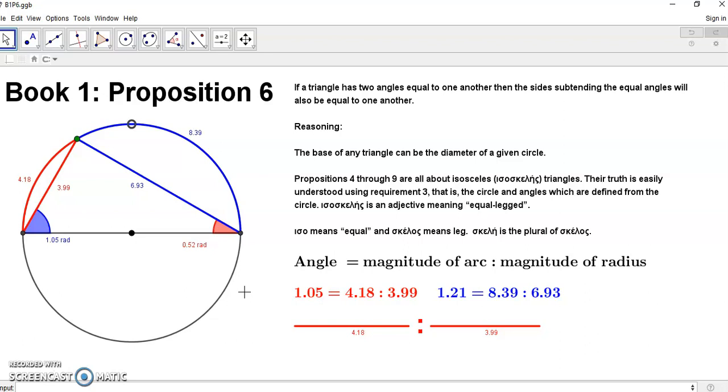The majority of them are unnecessary, as I'm about to explain to you, simply because their truth is easily understood using requirement three, which means that it is possible to have a symmetrical path about a given center. Now it's very important that you read my free article.